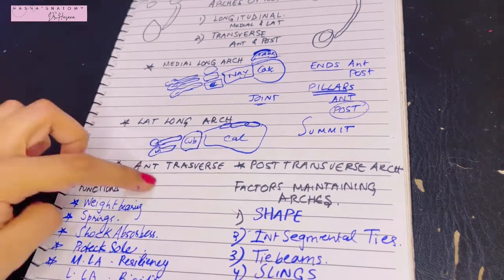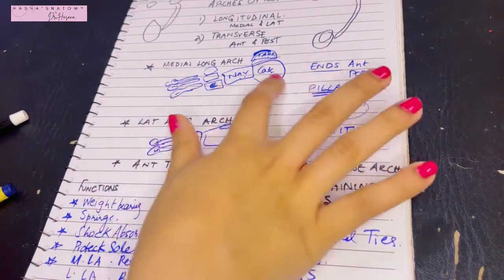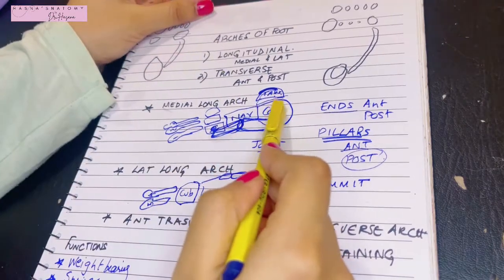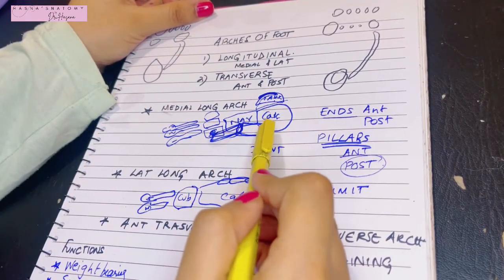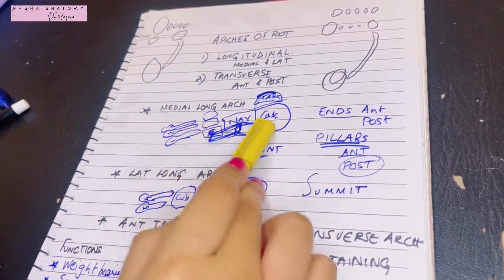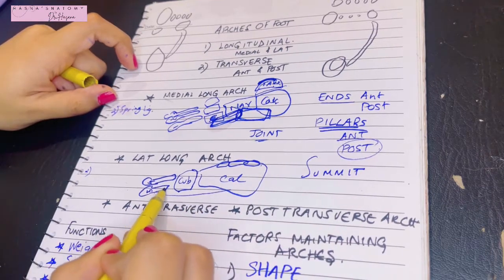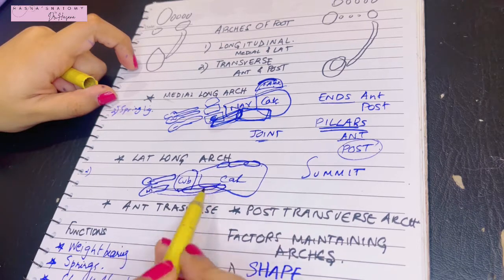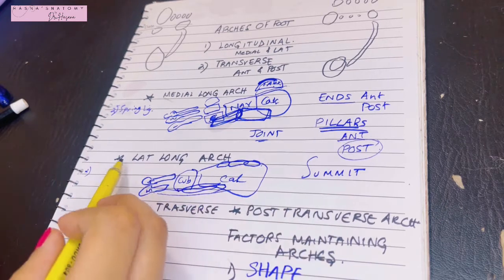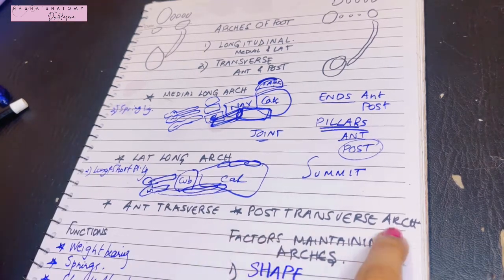Now let's discuss intersegmental ties in each arch. For the medial longitudinal arch, the intersegmental tie is the spring ligament, which links the calcaneum and navicular, running from the anterior margin of the sustentaculum tali to the navicular. For the lateral longitudinal arch, the intersegmental ties are the long and short plantar ligaments: the long plantar ligament runs from the calcaneum to the metatarsals, and the short plantar ligament runs between the calcaneum and cuboid.